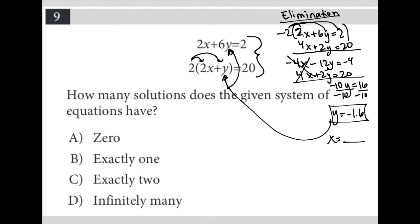I know there's not zero solutions because I got a y value. When I plug that y value in, I'll get an x value. So exactly one solution makes the most sense. It doesn't make sense that I would get two solutions or infinitely many solutions.